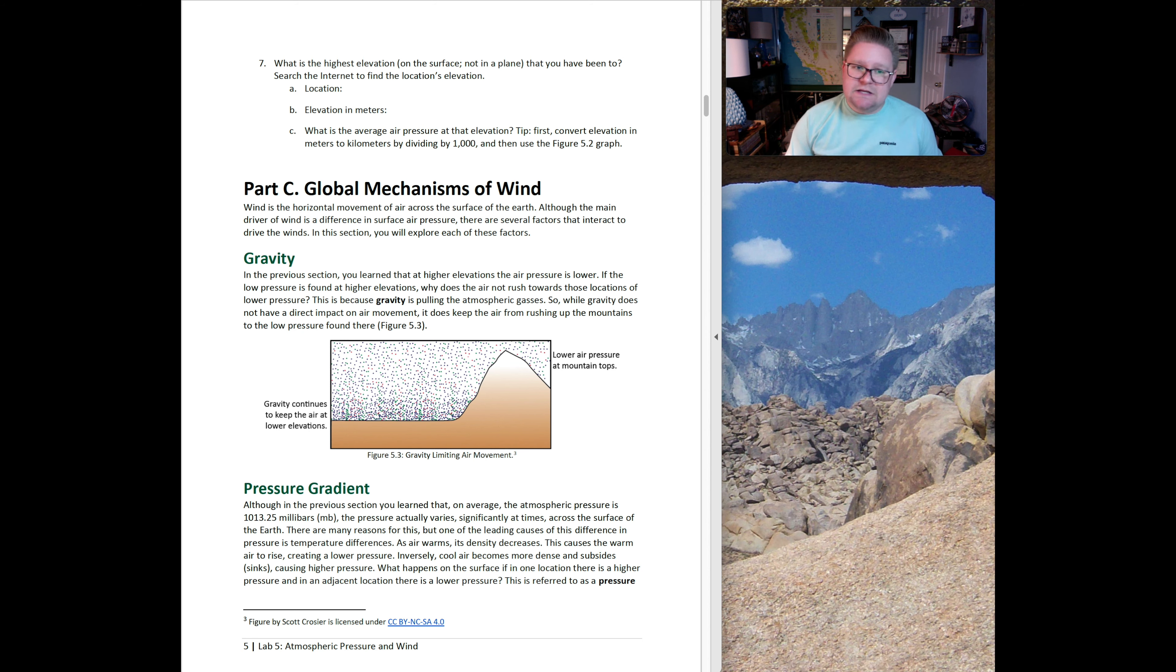Part C is looking at the global mechanisms of wind. Wind is the horizontal movement of air across the surface of the Earth. Although the main driver of wind is the difference in surface pressure, there are other factors that can interact and drive the winds. The first one will be gravity. This diagram, figure 5.3, is explaining how gravity can limit air movement. The next part is looking at pressure gradient. Although on average the atmospheric pressure is about 1013.25 millibars, the pressure can vary and we can see that there's a gradient.